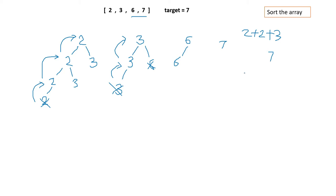Starting with 7, it equals the target directly, so 7 alone is one result. We can't grow further. So our final answers are [2, 2, 3] and [7].